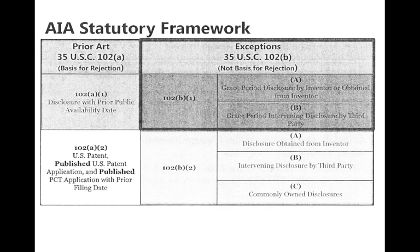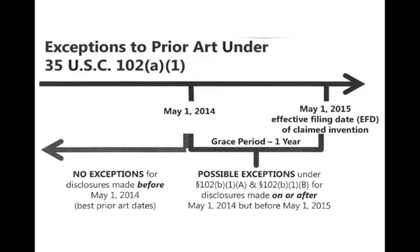Some exceptions are simple, some are less simple. Keep this little chart in front of you — blame the USPTO if it's hard to read. You might have to write over top of it to clarify it. Exceptions to prior art under 102 A1 — 102 A1 is about your stuff.